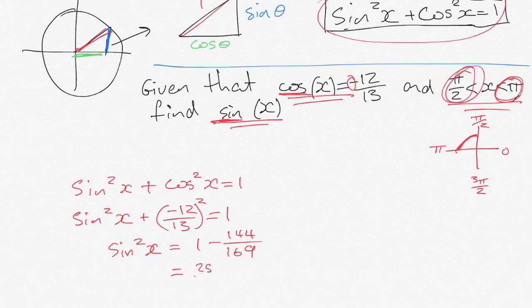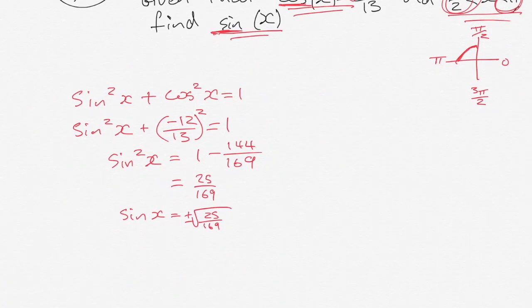And when I'm doing the square root of that, sin of x is equal to the square root of 25 over 169 and it should be the positive or the negative square root of that which is, I can do the square root of 25 which is 5 over the square root of 169 which is 13.